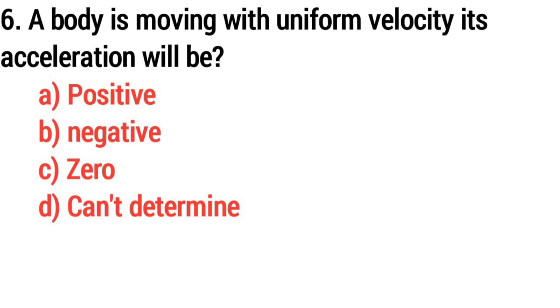Question 6. A body is moving with uniform velocity. Its acceleration will be? Answer: Option C, Zero.